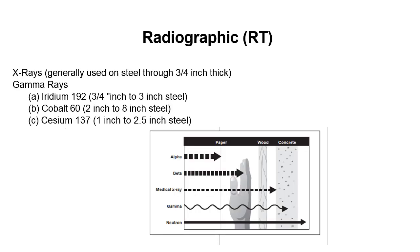To get useful radiation for industrial radiography, there are a couple of different methods. You can use an X-ray generator or X-ray tube, which is generally used on steel through three quarters of an inch. You can also use gamma rays, which are produced by radioactive materials like iridium 192 or cobalt 60. Iridium 192 is used for three quarter of an inch to three inch steel, and cobalt 60 is two inch to six inch steel. There are some other sources we'll touch on in later slides.